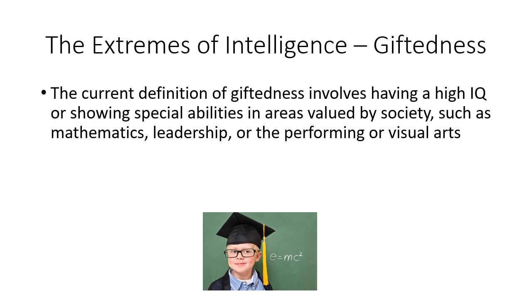On the other end of the spectrum is giftedness. The current definition of giftedness has changed — it's having a high IQ, or you can have a lower IQ and still be considered gifted by showing special ability in an area valued by society. So visual and performing arts, kinesthetic ability, musical ability — you can have low IQ but do really well in these areas and be considered gifted. The current definition of giftedness isn't just high IQ, but you have to show exceptional ability in an area valued by society — counting beans in a jar wouldn't qualify.